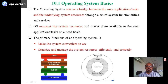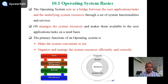What is an operating system? The operating system acts as a bridge between the user and the hardware, through a set of system functionalities and services. The main purpose of the operating system can be seen in the block diagram on screen. When you give a command, the application program executes based on that command, and this is managed by the operating system, which works like a link or a bridge between the application program and the hardware.